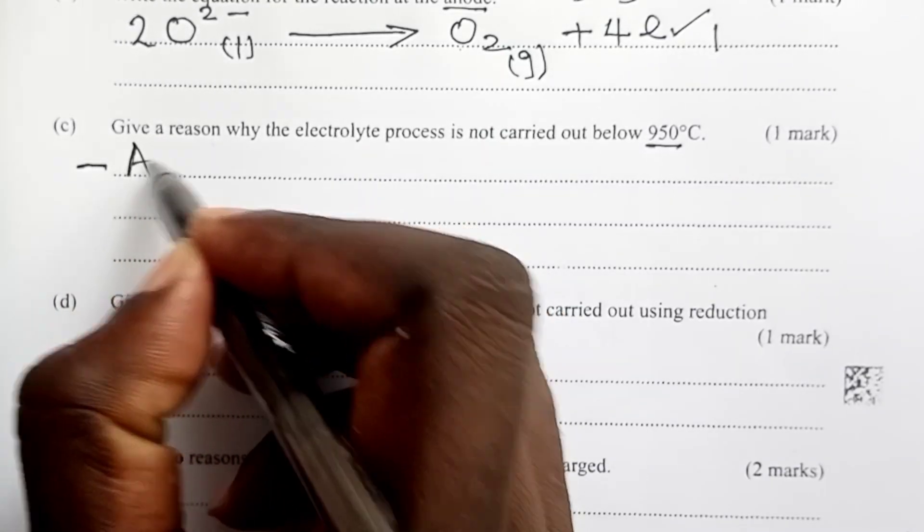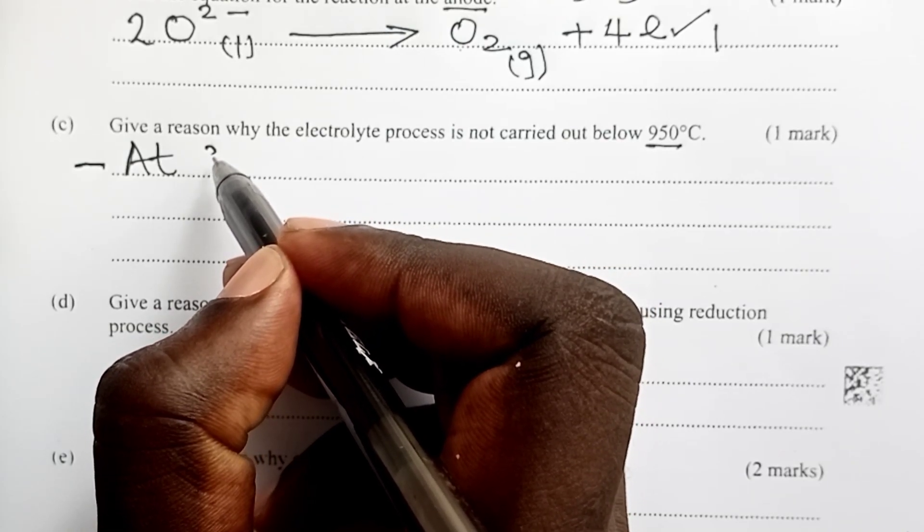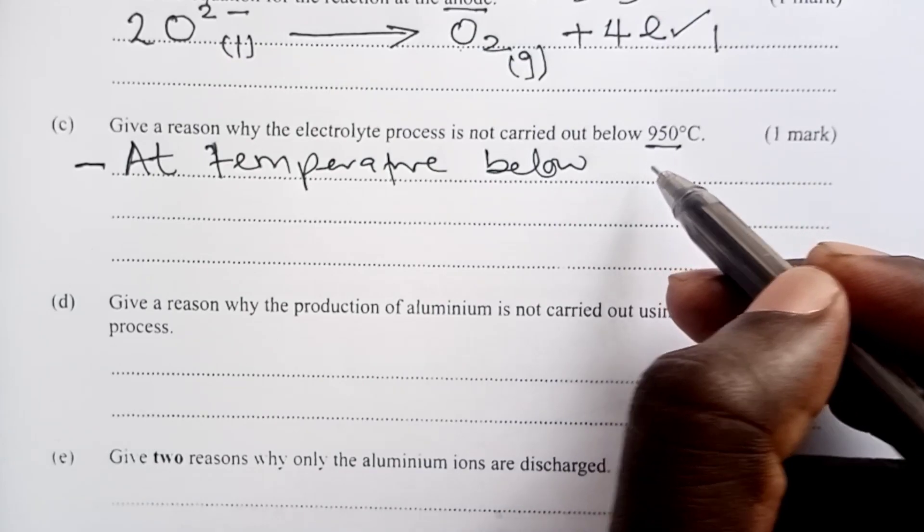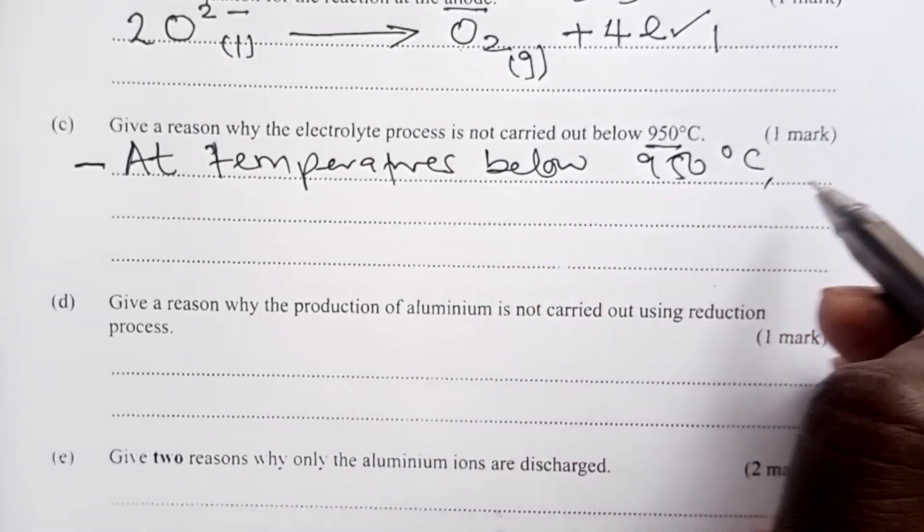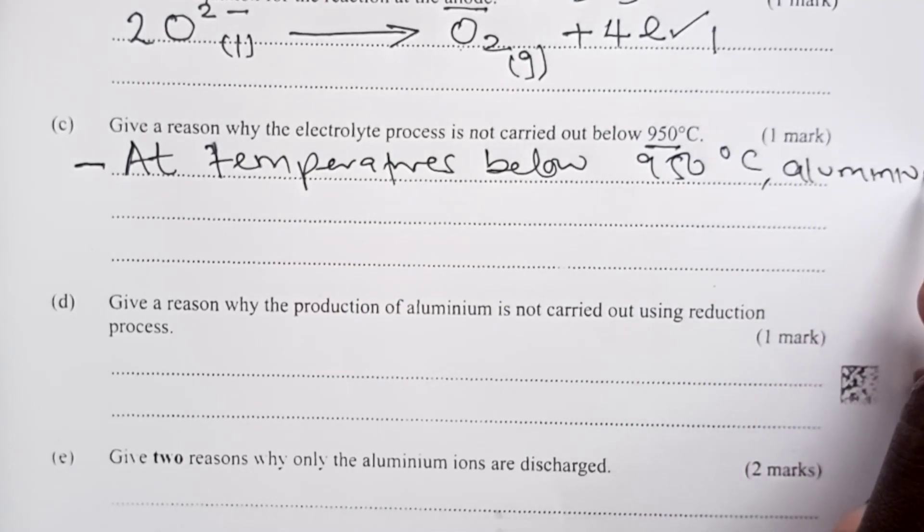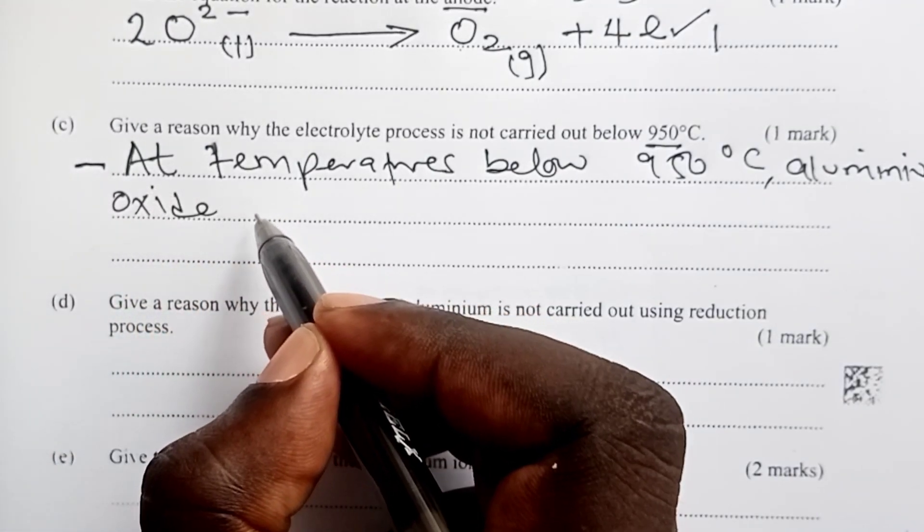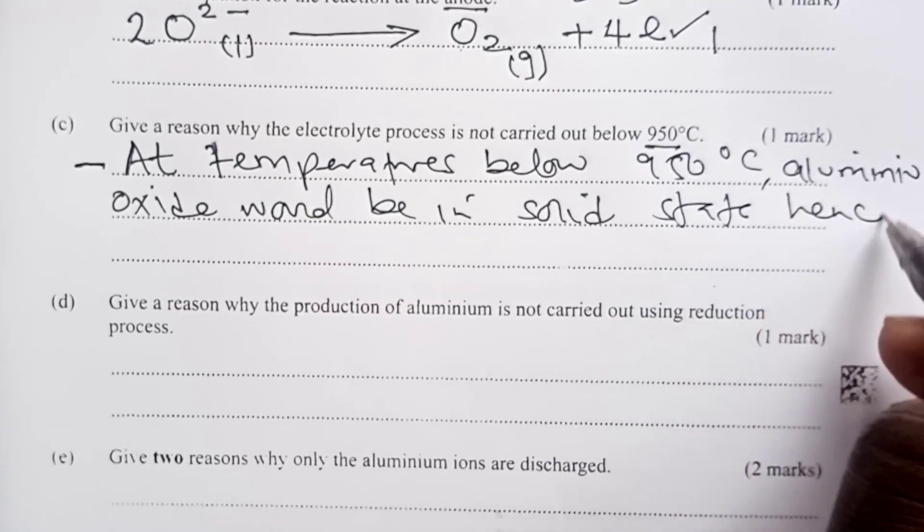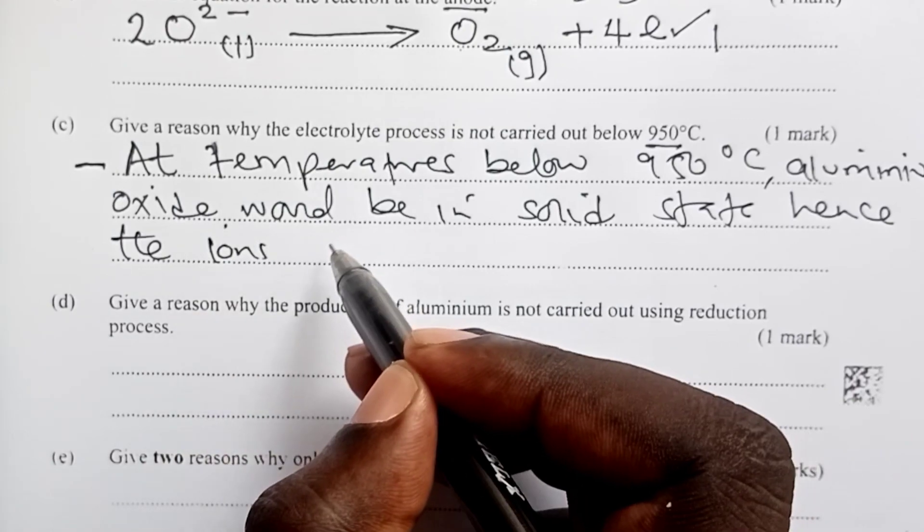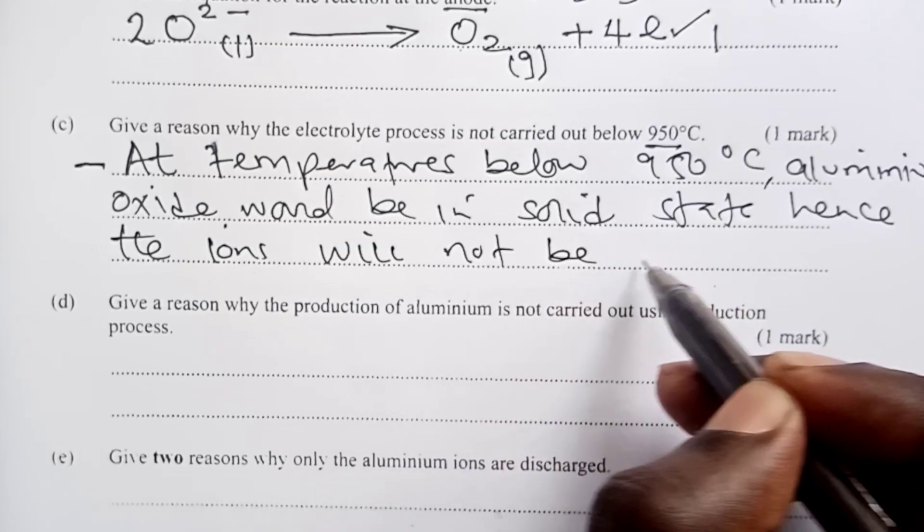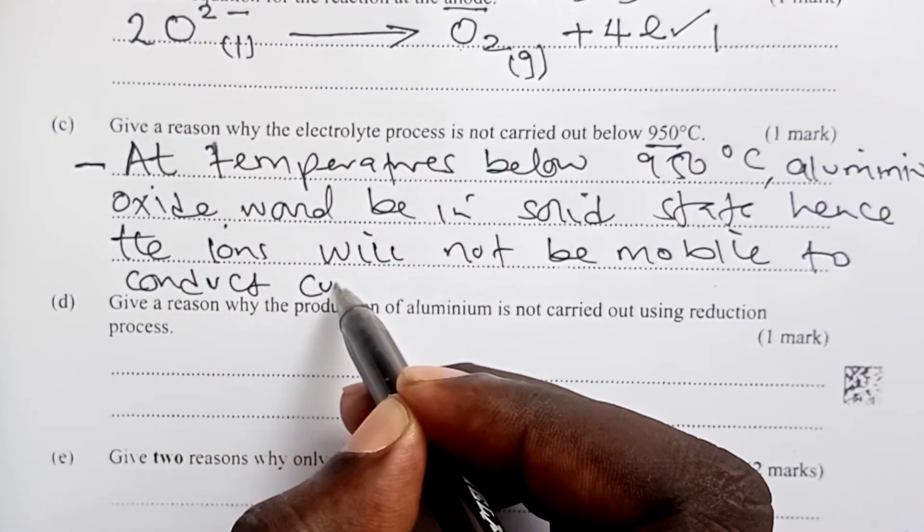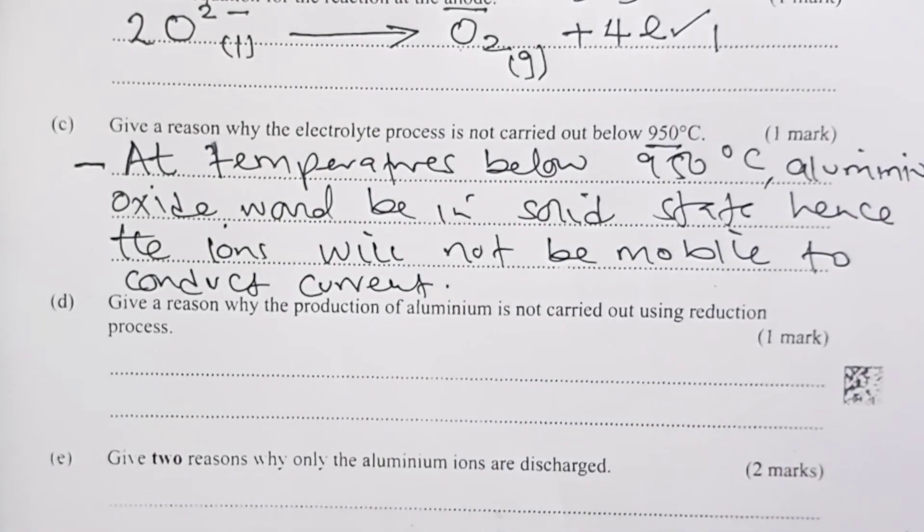The expected answer here would be that at 950 or anything below 950, the aluminum oxide would be in solid state. At temperatures below 950, aluminum oxide would be in solid state. And then what happens, hence, the ions will not be mobile to conduct electric current. That would be the expected answer for that part, again, for one mark.